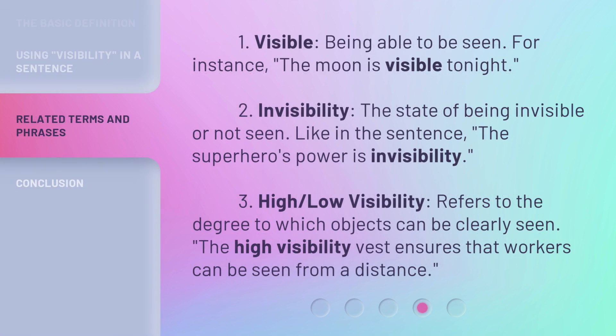1. Visible — being able to be seen. For instance, the moon is visible tonight. 2. Invisibility — the state of being invisible or not seen. Like in the sentence: the superhero's power is invisibility.